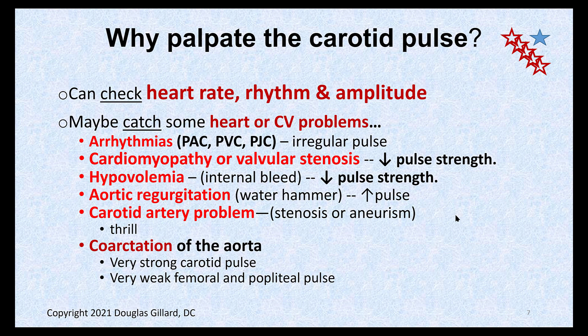Why palpate the carotid pulse? Just like any pulse, we can get rate, rhythm, and amplitude — to check if the heart is pumping normally. Is the pulse irregular? That could indicate premature atrial contractions, premature ventricular contractions, or PJCs. Maybe the pulse is really weak due to a failing heart or aortic stenosis, or maybe they have aortic regurgitation giving a crazy strong pulse that disappears quickly — the Corrigan or water hammer pulse, always suggestive of aortic regurgitation.